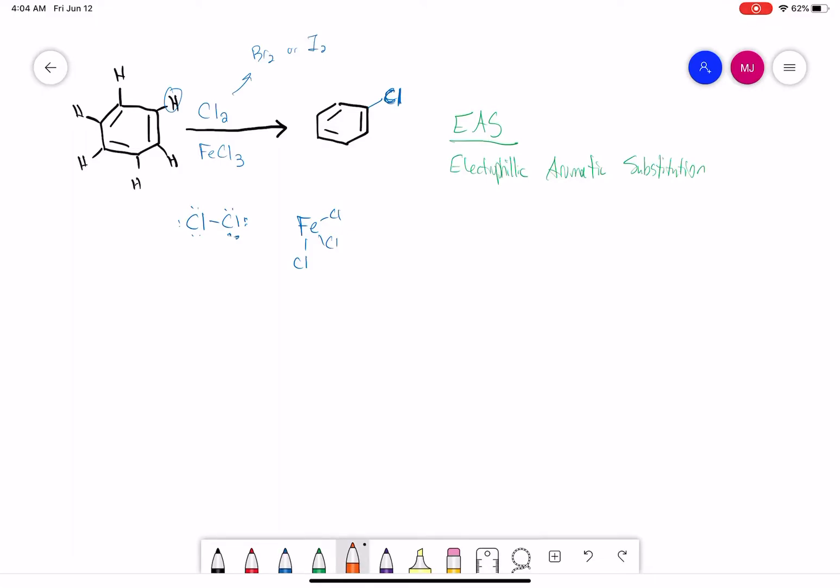So in the first part of our mechanism, a lone pair on the chlorine is going to form a new bond to the iron. The iron is a Lewis acid, has an empty orbital, so that chlorine will attack the iron molecule, forming a new bond here.